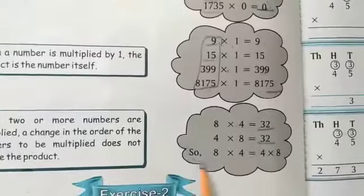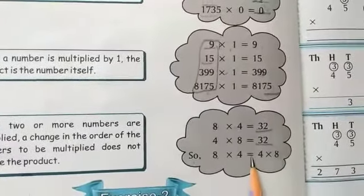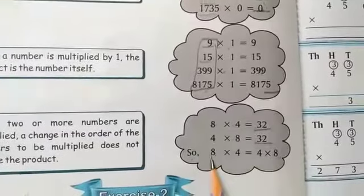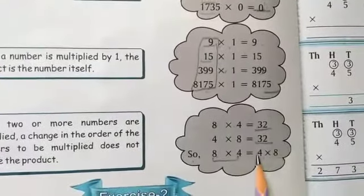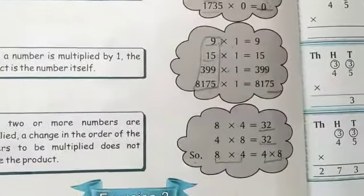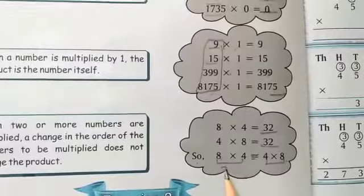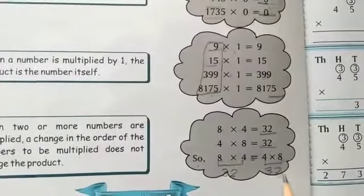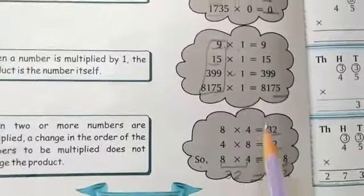Now, 8 multiplied by 4 equals 4 multiplied by 8. If we multiply 8 by 4 and multiply 4 by 8, then the answers are equal — both are 32. So 8×4 = 4×8 = 32. This shows the two are equal.